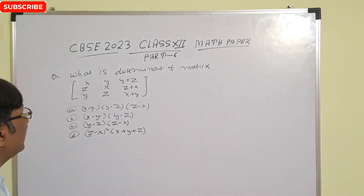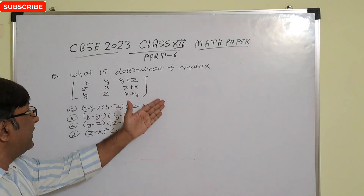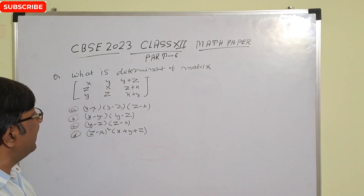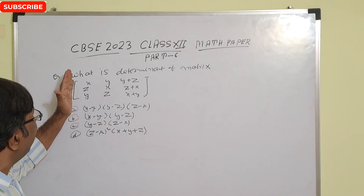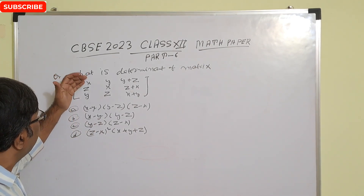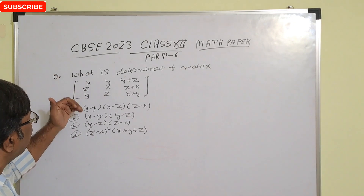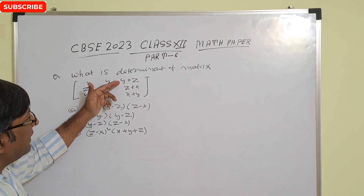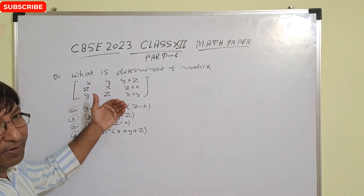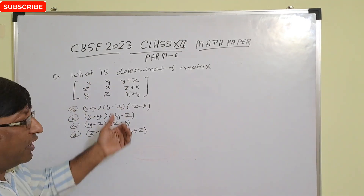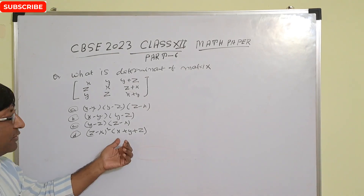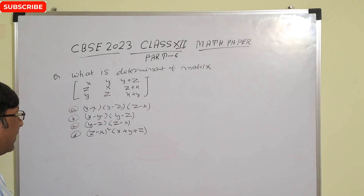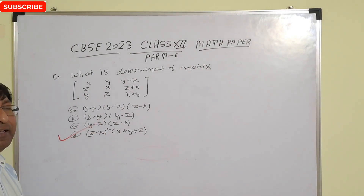What is the determinant of this matrix? Using properties of determinants, if we add rows r1, r2, r3 in column 1, we get x plus y plus 8 as a common factor in each row. Taking the common factor x plus y plus 8 out, our answer is option D. Just by observing this structure you can identify the correct answer; option D is correct.